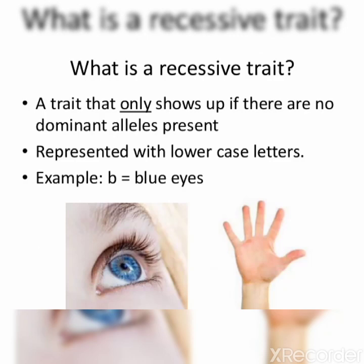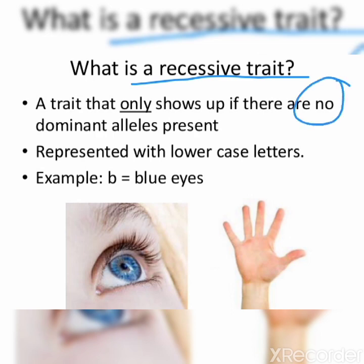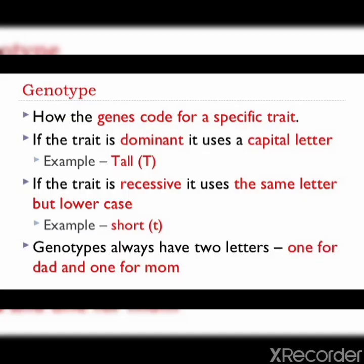A recessive trait is a trait that only shows up if there are no dominant alleles present. It is represented with small letters. The letter will be the same — capital B for brown eyes which is dominant, and small b for blue eyes which is recessive. Genotype describes how the genes code for a specific trait.